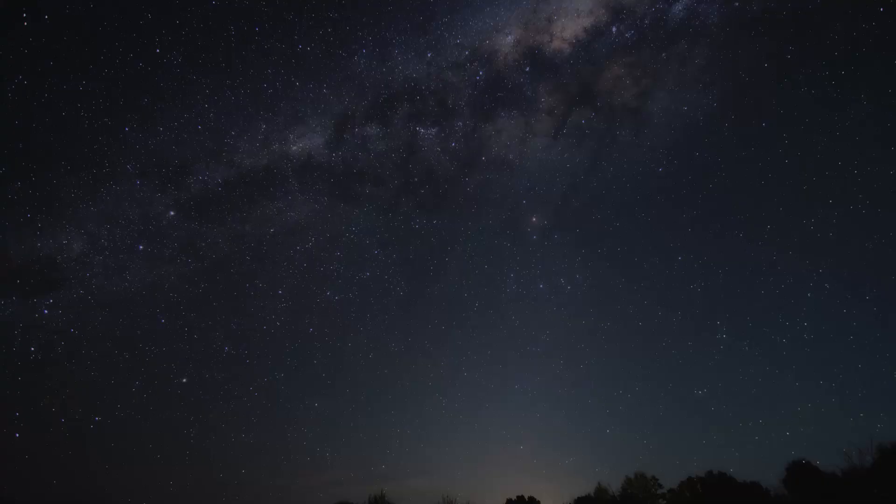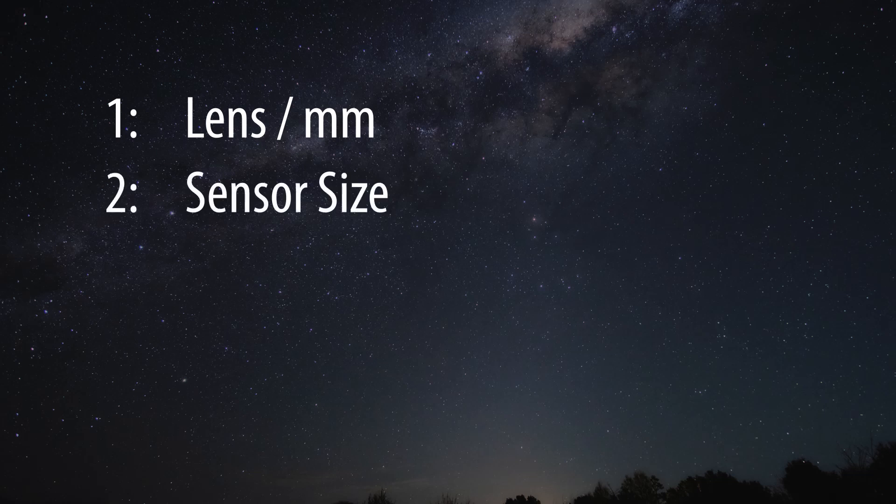First of all, shutter speed. To work out the perfect shutter speed, there are a few factors to consider. Number one: how wide is your shot, and what lens are you using and what have you got it set to? Number two: the size of your sensor and how many megapixels it is. For all of this video, we're going to be basing it off the latest 26.1 megapixel APS-C sensor from Fujifilm. If you're using a slightly older 24 megapixel sensor, this will still be really, really close. However, if you're using the oldest 16 megapixel sensor, some of this is going to be a little bit out, but still heaps of this information will be very helpful.